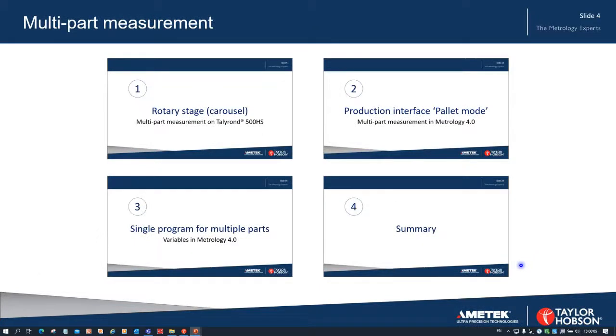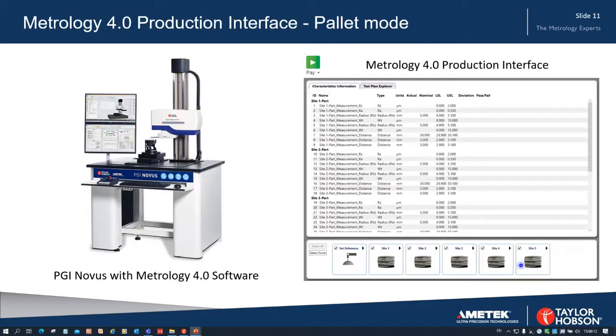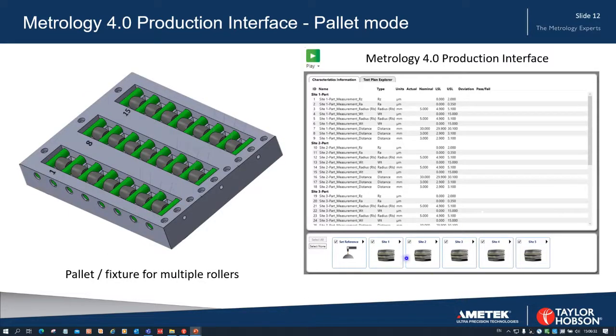So next we're going to look at the production interface. Here is the production interface in Metrology 4.0, and this is what it looks like. On the left we can see the PGI Novus with Metrology 4.0 software. The production interface comes as standard as part of that, and we're running it in what's called pallet mode. That means we can arrange for it to deal with a set of parts. So we've got a set of parts on the left there - multiple parts - and each of these is indicated site one, site two, site three, all the way. In this case just showing five sites. We can select or deselect these sites so we can choose which ones to measure. We can put different parts in different positions if we want, and there is a reference.